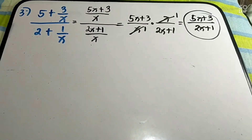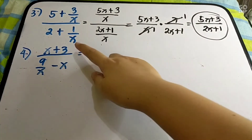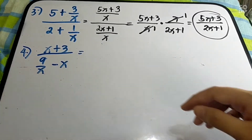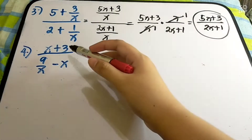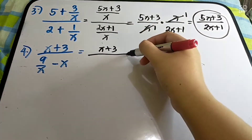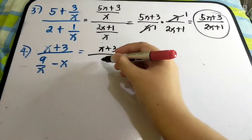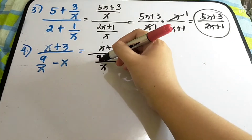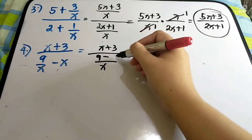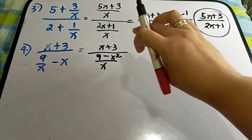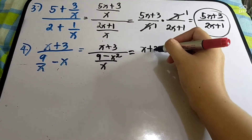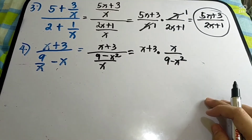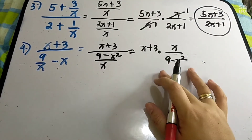Is it clear? Let us have the next example. Number 4: (x + 3/9) over (9/x minus x). The numerator is just x + 3. For the denominator, you have subtraction of rational numbers, so find the LCD which is x. Then x divided by x is 1, times 9 gives 9. Minus x times x gives x squared. So the denominator becomes (9 minus x squared) over x.